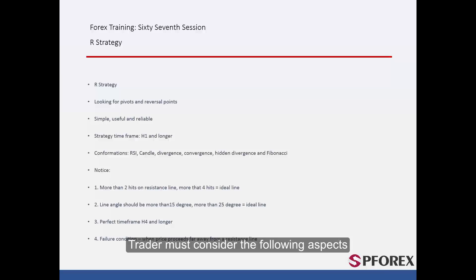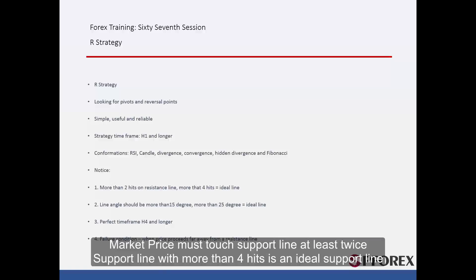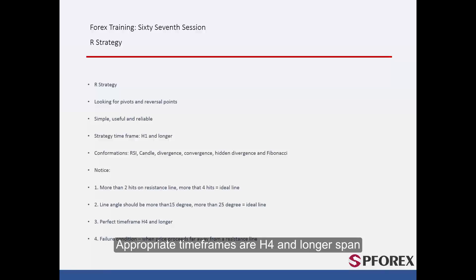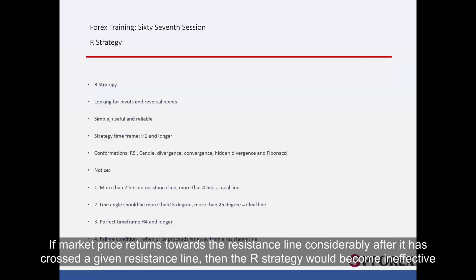A trader must consider the following aspects. Market price must touch the support line at least twice; a support line with more than 4 hits is ideal. A suitable support line has an angle greater than 15 degrees, with ideal being over 25 degrees. Appropriate timeframes are H4 and longer. If the market price returns considerably towards the resistance line after crossing it, the R strategy would become ineffective.